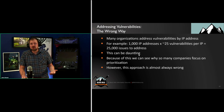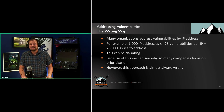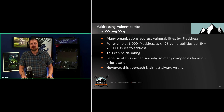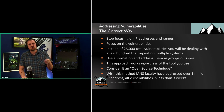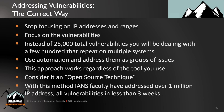It's the most common approach I see, and it's wrong — you just shouldn't do it this way. Instead, stop focusing on IP addresses and ranges and focus on the vulnerabilities. So instead of 25,000 vulnerabilities, you're really looking at a few hundred vulnerabilities spread across multiple systems.